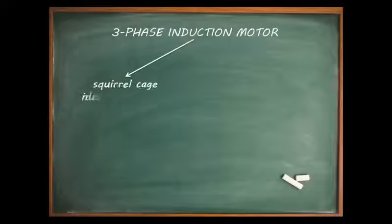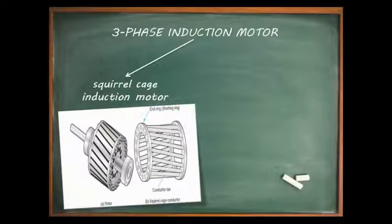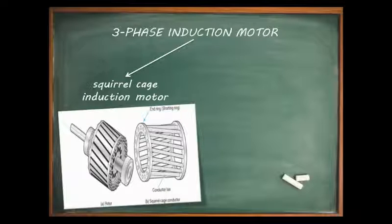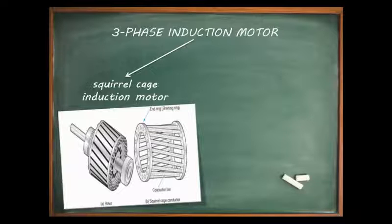A three phase induction motor is divided into squirrel cage induction motor. In the squirrel cage induction motor, copper, brass, or aluminium bars are placed at the rotor as the rotor conductors, parallel or approximately parallel to the shaft and close to the rotor surface. The currents flow through the least resistive path, that is the rotor conductors.